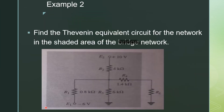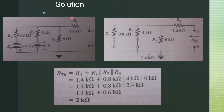In the next example, we have to find the Thevenin equivalent circuit for the network in the shaded region. R is the load resistor across which we have to find the Thevenin equivalent circuit. In the first step, remove RL from points A and B. Now we have to find R Thevenin, so we set the voltage sources to 0 and replace them with short circuits. R3, R2, and R1 are in parallel combination with R4 in series. So R Thevenin is equal to R4 plus R1 parallel to R2 parallel to R3, and we get R Thevenin equal to R2.